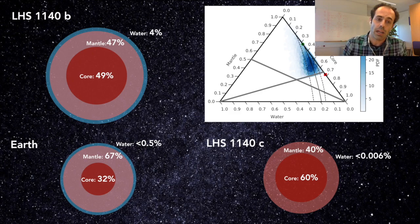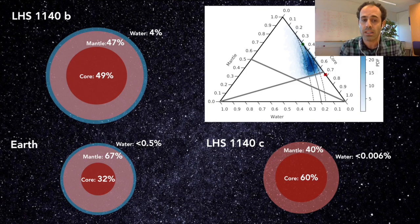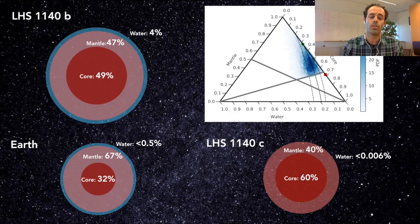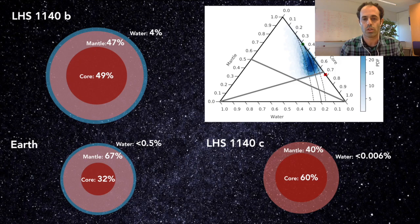On the other side, the inner planet being way less massive is mostly composed by a huge core twice the one of the earth and 40% of its mass in the mantle with a negligible water content as expected for this short period.